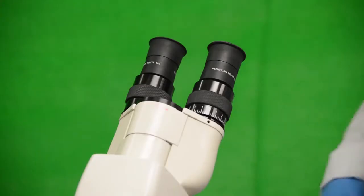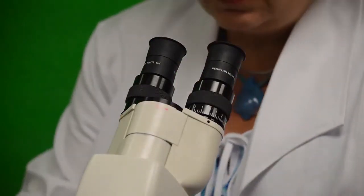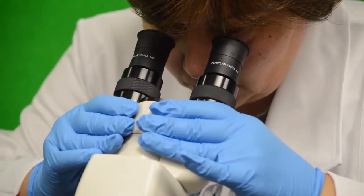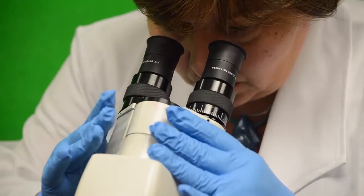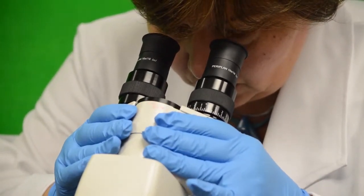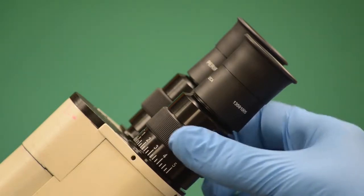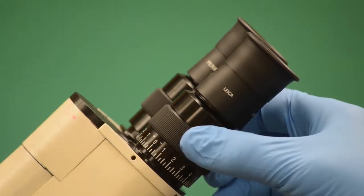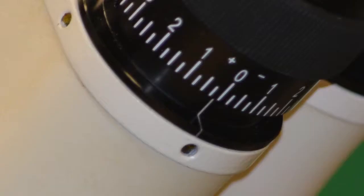The ocular lenses are the set of lenses that extend from the top of the microscope. These are the lenses that you look through. Most microscopes are binocular and have two ocular lenses. On the side of the left ocular is a numbered scale called the vernier. This scale should be set to zero.